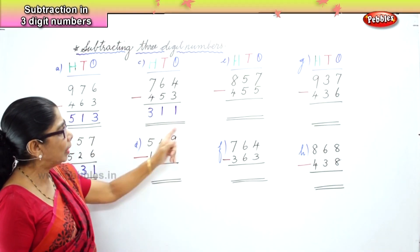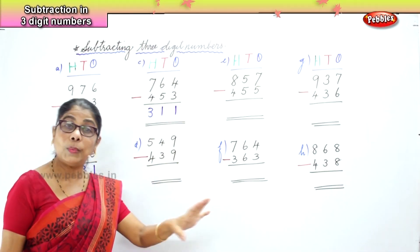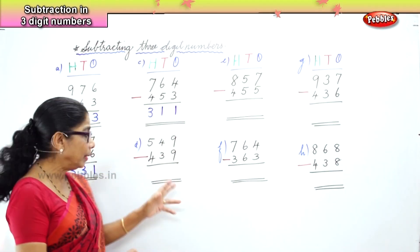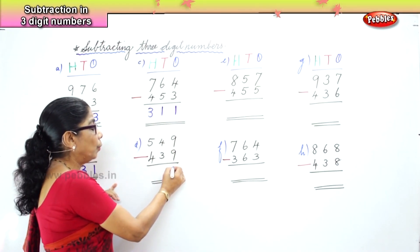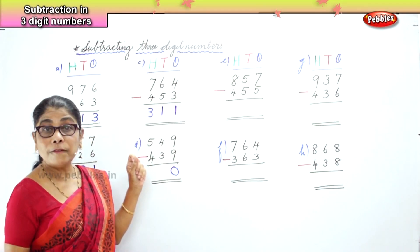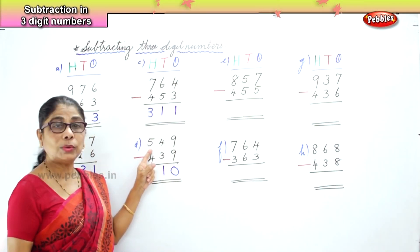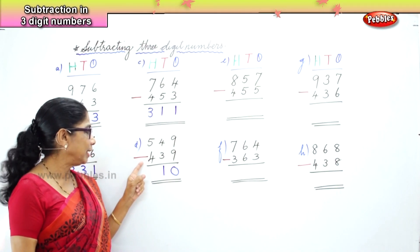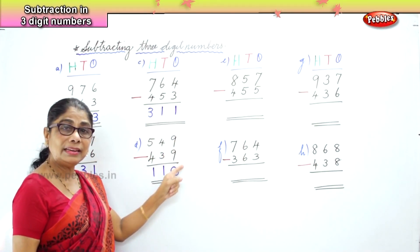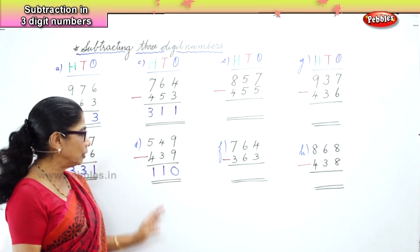Now we go to another sum. In the 1s place, we have 9 ones take away 9 ones. 9 take away 9, you get 0 — any number take away the same number gives 0. In the 10s place: 4 tens minus 3 tens is 1. In the 100s place: 5 hundreds take away 400. 5 minus 4 is 1. The answer is 110.